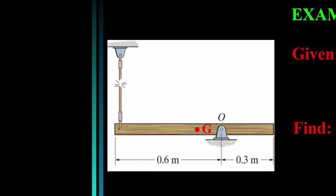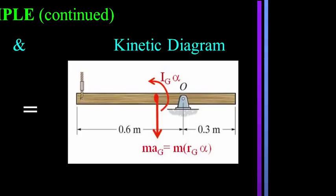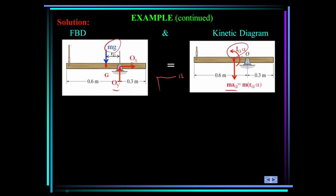Here's an example. The uniform cylinder rod has a mass of 15 kg and its mass center is located at point G. Find the reactions at the pin O and the angular acceleration of the rod just after the cord is cut. Since the mass center G moves in a circle of radius 0.15 meters, its acceleration has a normal component towards O and a tangential component acting downward and perpendicular to R_G. We show the reaction forces at the pin and the weight of the rod on the free body diagram, and the kinetic diagram on the right. Omega is 0 here because the cord was just cut, so the normal component of acceleration at G is zero.